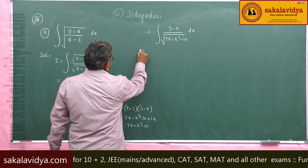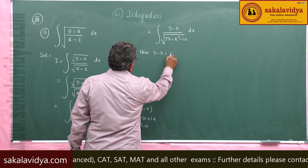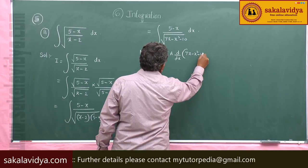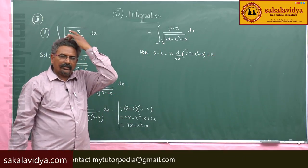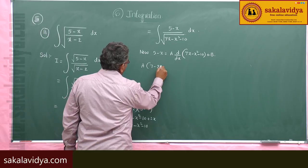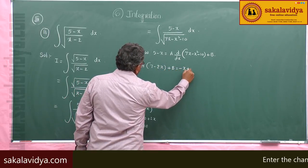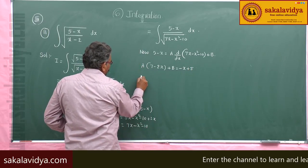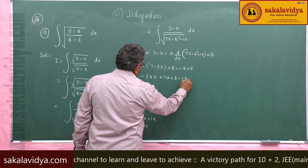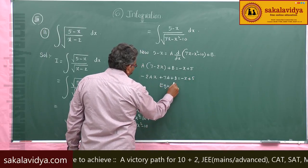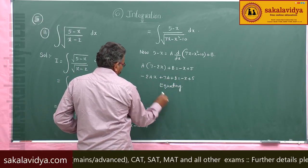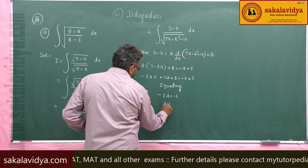Now, (5 minus x) can be written as a times the derivative of (7x minus x squared minus 10) plus b, where a and b are constants to be evaluated. So, a times (7 minus 2x) plus b equals (minus x plus 5). This gives minus 2ax plus 7a plus b equals minus x plus 5. Equating x coefficients: minus 2a equals minus 1, so a equals 1 by 2.